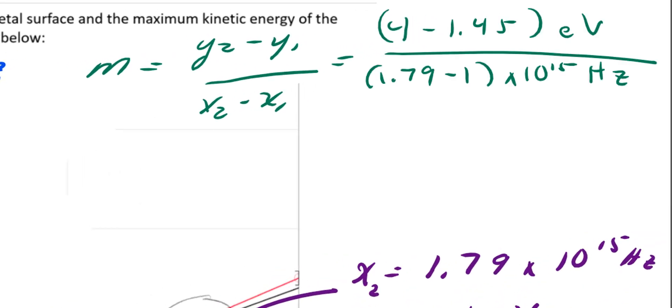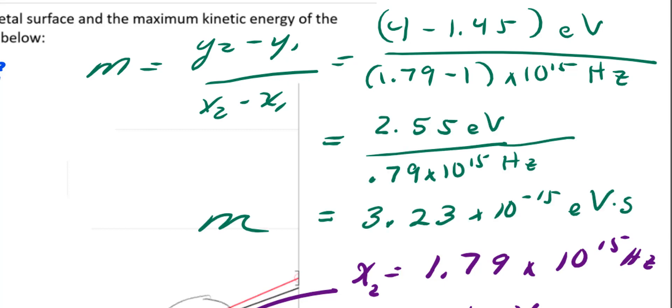Plugging them in, I've got 4 minus 1.45 electron volts over 1.79 minus 1 times 10 to the 15 Hertz. Dividing it all out, I get the slope is 3.23 times 10 to the negative 15 electron volt times seconds. Electron volt seconds, how did I get that kind of a unit? Let's take a look at the units.